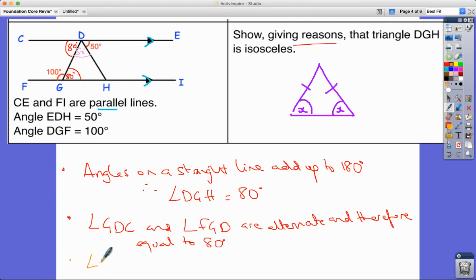Angle GDH is 50, and therefore I can find this one here because I've got 50 and 80. I know the angles in a triangle add up to 180 degrees, therefore angle GHD is 50 degrees.